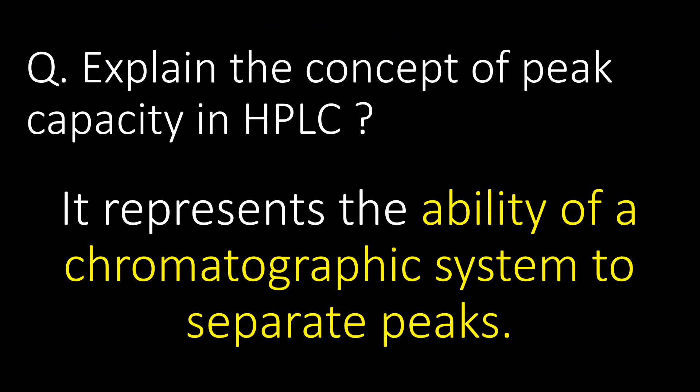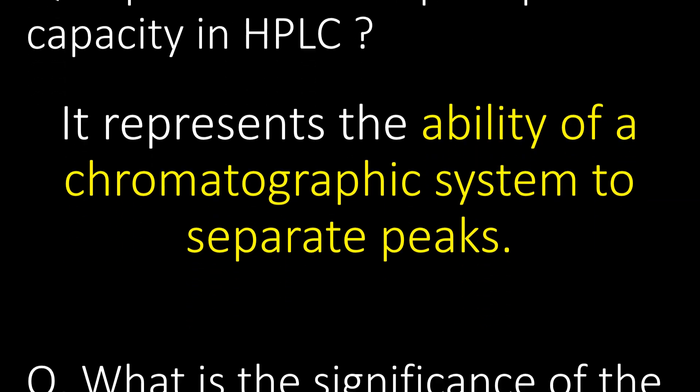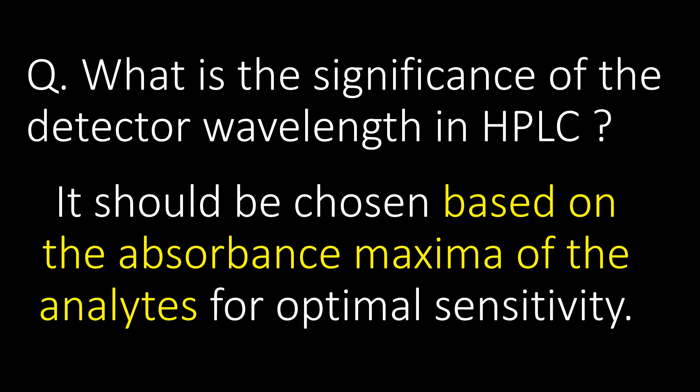Explain the concept of peak capacity in HPLC. Peak capacity represents the ability of a chromatographic system to separate peaks. The detector wavelength should be chosen based on the absorbance maxima of the analyte for optimal sensitivity.